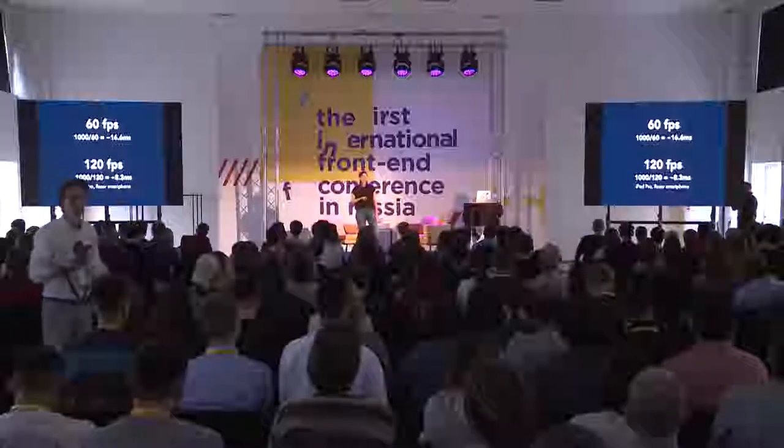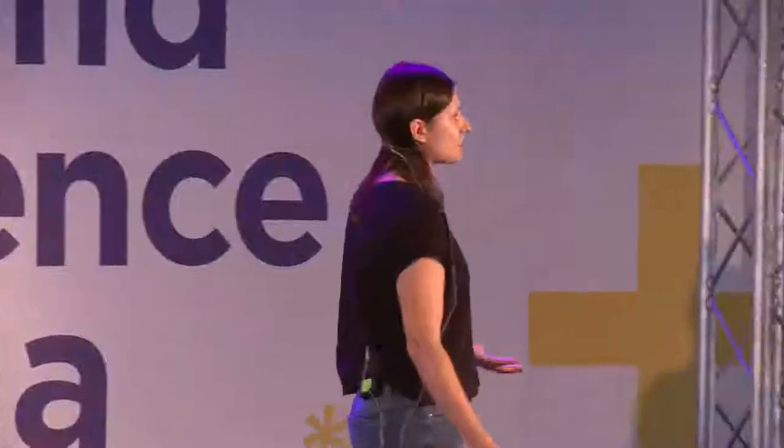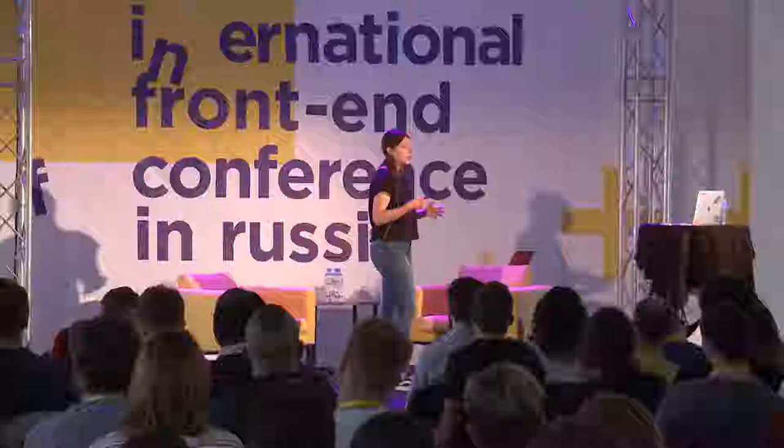Now there are some devices starting to have 120 frames per second — new iPad Pros and Razer gaming smartphones. This means we have half the budget we used to have. I'm not saying everyone needs to support these devices now, but we might be facing a revolution soon — similar to how retina screens started with a few devices and then spread everywhere. What is popular in the gaming industry is working in between frames, making less work for the browser. As web developers, we don't care enough about this yet, but I'll try to help you understand what to do.